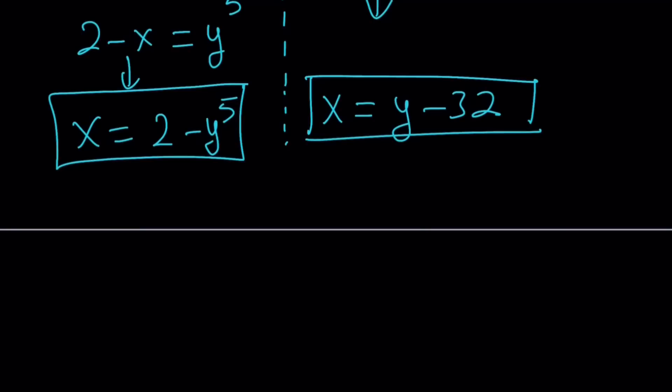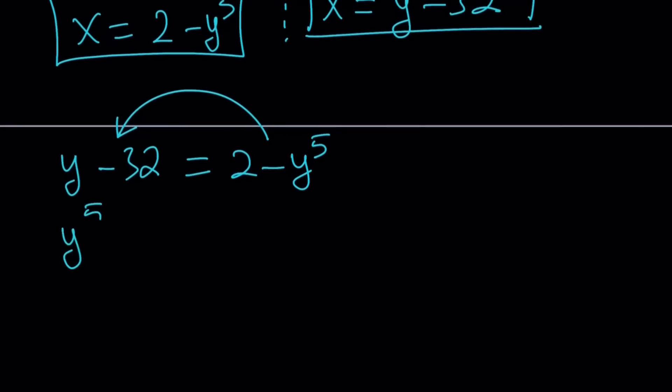Let's go ahead and set them equal to each other. I want to write the y minus 32 first, and then set it equal to 2 minus y to the fifth power. Then I want to put everything on the left hand side so that y to the fifth becomes positive. So let's add y to the fifth, then write the plus y, and then subtract 2. That's going to bring you 34, but you don't want to do that. Here's what we want to do: write it as minus 32 minus 2. So don't simplify. And this is equal to 0.